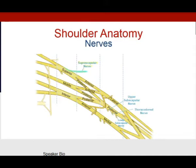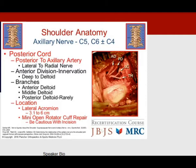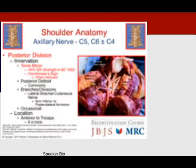The brachial plexus is important. The axillary nerve comes off the posterior cord, posterior to the axillary artery, which is why it's less affected in traumatic knife wounds. Its anterior division innervates the anterior, middle, and posterior deltoid. Clinically, during a mini-open rotator cuff repair with a lateral incision, evidence shows you should be cautious from 3 to 6 centimeters at the lateral acromion for the axillary nerve branch.